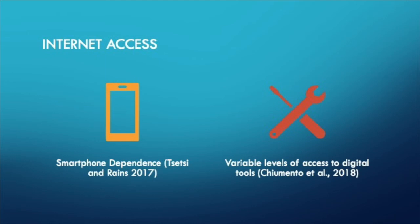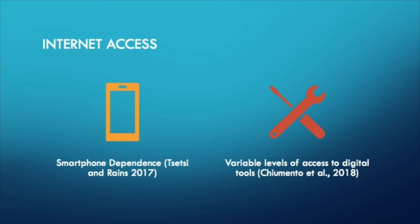Interviewing online may require the participant to download an app such as Skype or Zoom. This assumes the participant has the equipment with which to do this — they may not. For example, if someone is only able to access the internet via a mobile phone, they might not have enough storage space to download an app which takes up a lot of space, or they might not have the data to be able to use it. Therefore, you need to think about which participants are likely to be included and excluded through your research and the consequences of this.